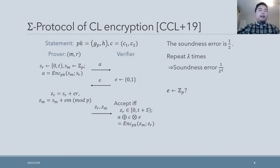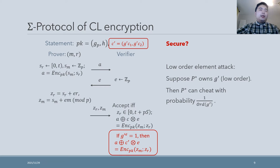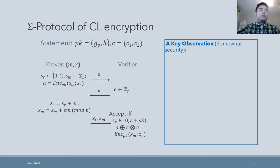So, what if the verifier's challenge is chosen from a large space? Unfortunately, if the verifier's challenge is chosen from a large space, this protocol is no longer secure. In fact, there is a low-order element attack. If the malicious prover P* owns a low-order element G', it could generate an invalid ciphertext C' as shown on the slides. Then, if G' to the power e equals 1, P* could convince an honest verifier with an invalid ciphertext.